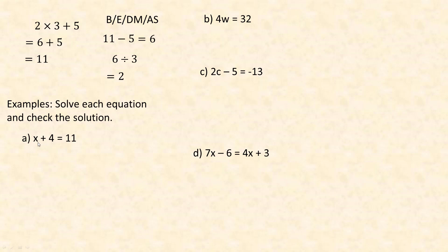In equations we want to use BEDMAS in reverse order — we want to get x alone or isolated. Right now x has 4 added to it to give 11. We don't want to know what x plus 4 is; we want to know what x is. So we undo the add 4 by subtracting 4 — the opposite of adding 4 is subtracting 4. Adding 4 and subtracting 4 gives 0, so only x remains on the left. 11 minus 4 is 7, so our solution is x equals 7.